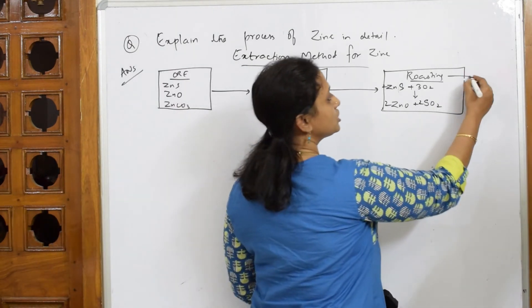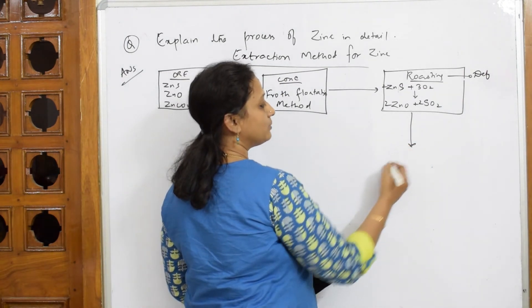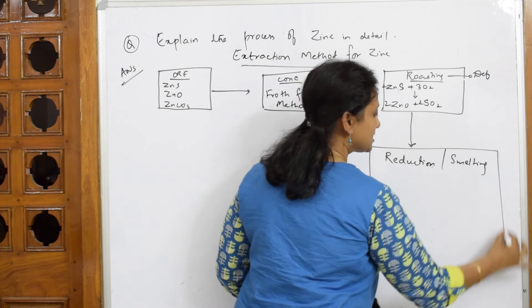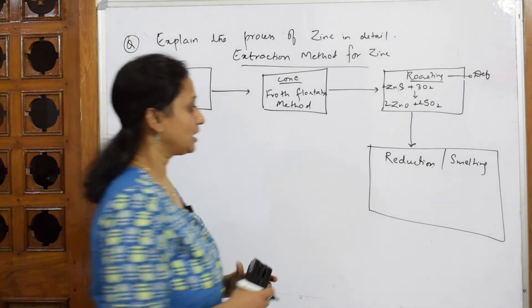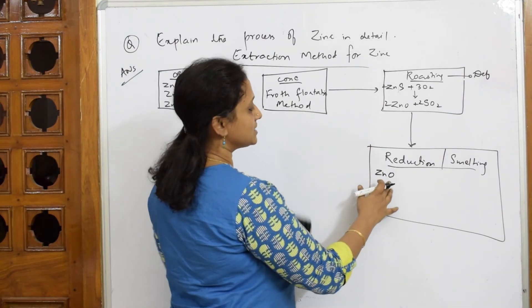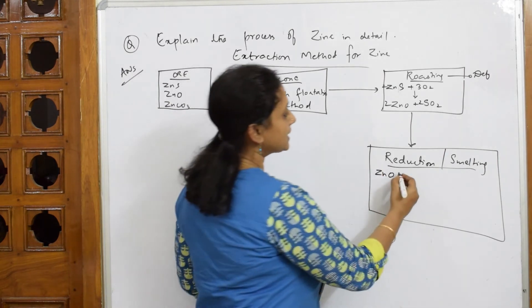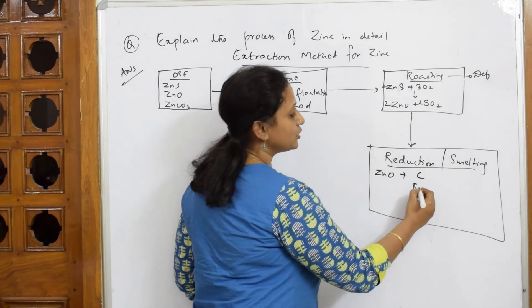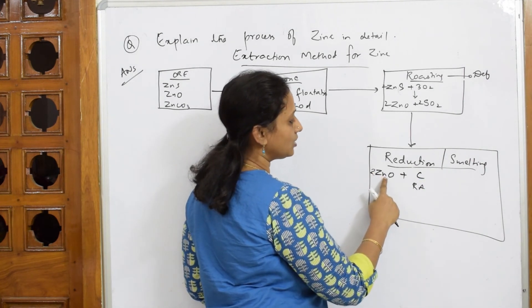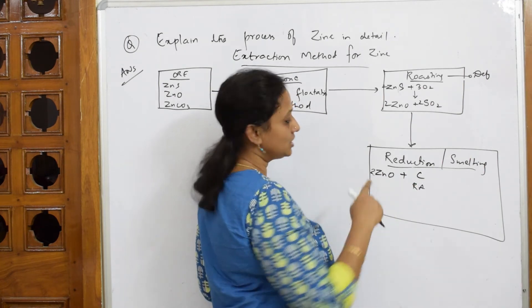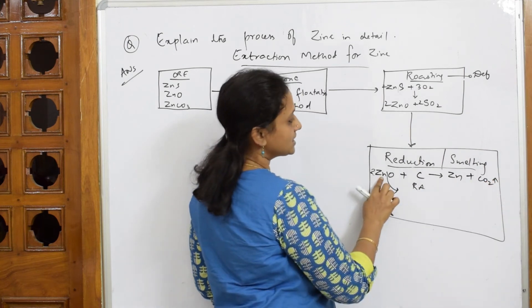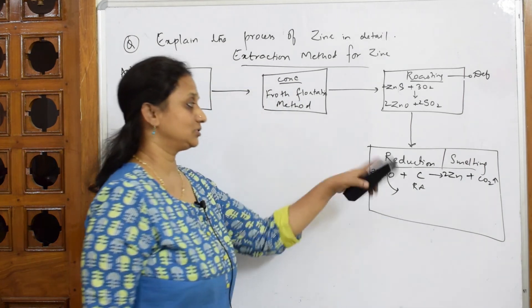After roasting, we take it to a method called reduction, also called smelting. In smelting, we use a reducing agent like coke (carbon). We pick up the metal oxide — ZnO (zincite) — and add coke. Taking two moles of ZnO, reduction means loss of oxygen: 2ZnO + C → 2Zn + CO₂. The oxygen is removed and we get zinc metal plus carbon dioxide. This is your reduction or smelting process.